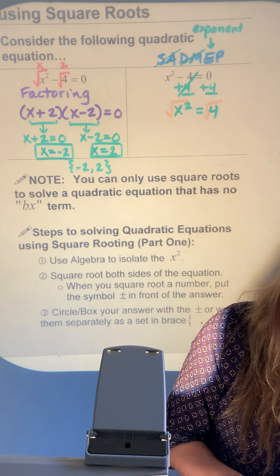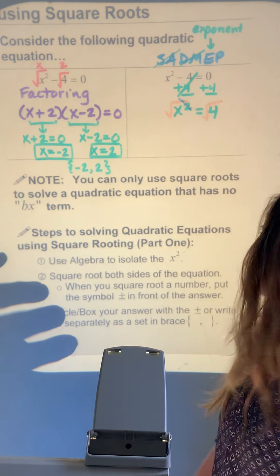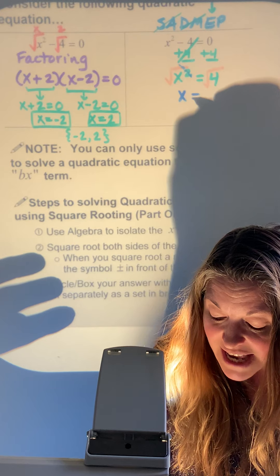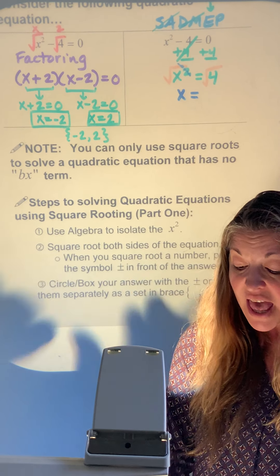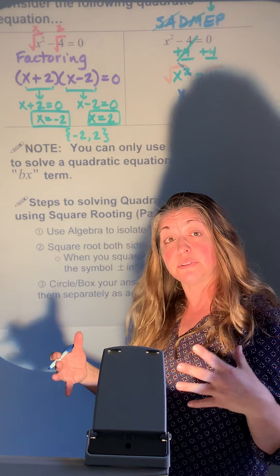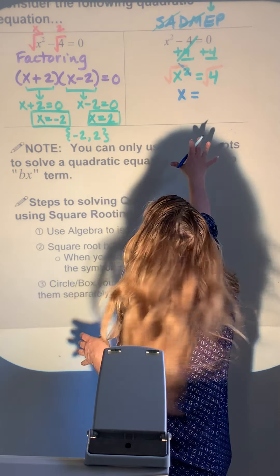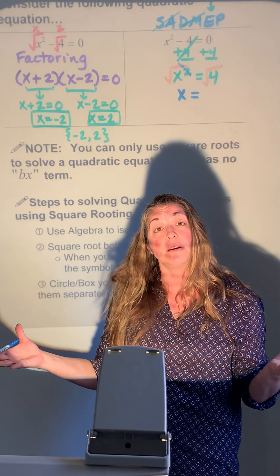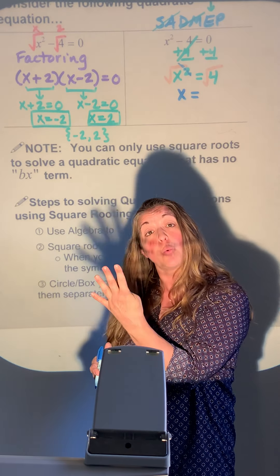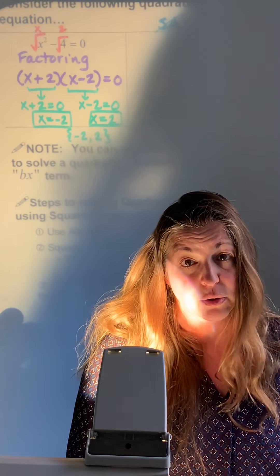Square rooting completely eliminates that exponent of 2, leaving just x. The square root of 4 — 4 is a perfect square, since 2 times 2 is 4 — so its square root is 2.